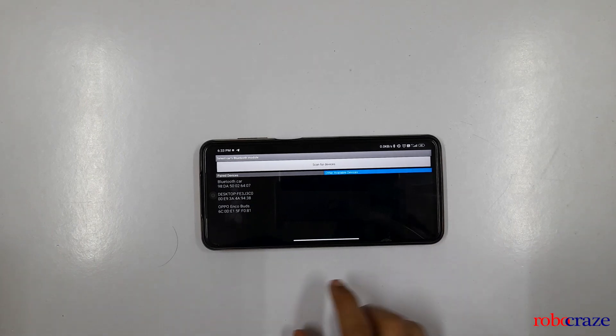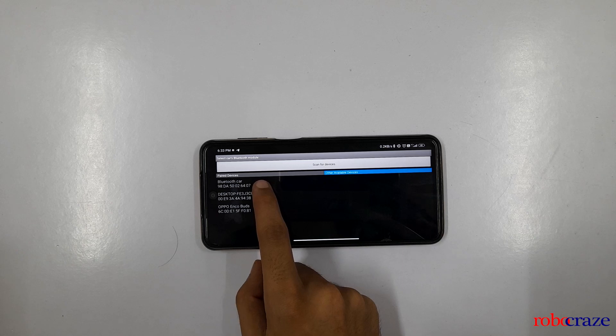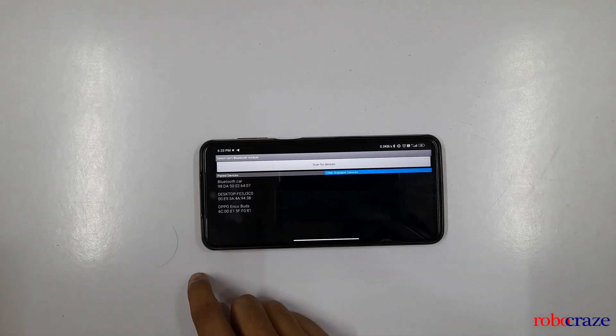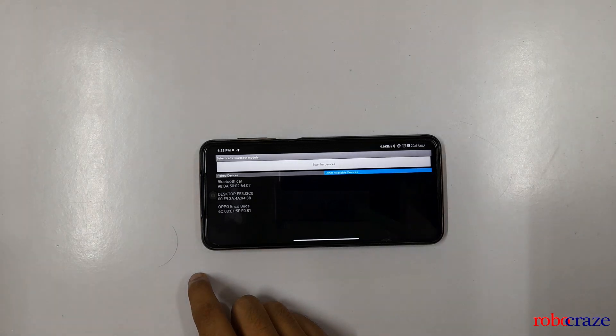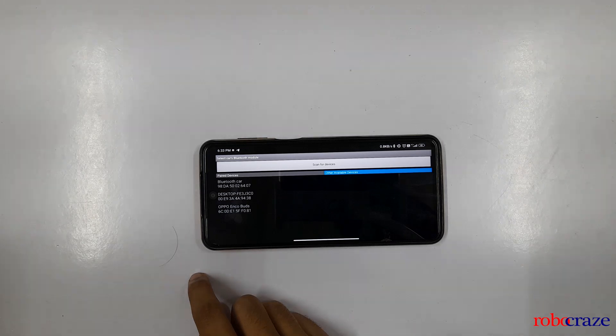As you can see this is the interface you will be getting. Go to settings, click on connect to car. As we have changed the Bluetooth name to Bluetooth car and we have already paired it, it's showing in the paired device section. But for you if you are doing it for the first time you will get the Bluetooth name as HC-05 in other available device section. So click on that and pair it up.